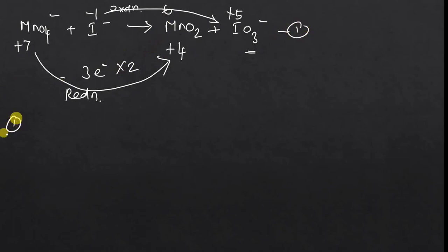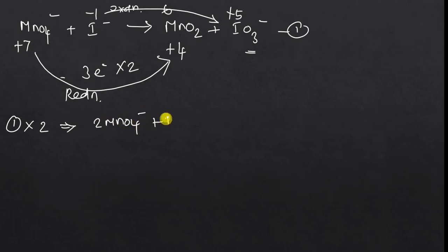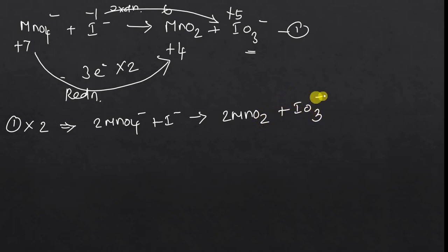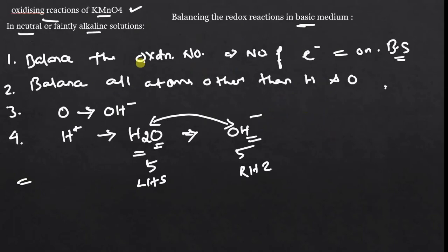So the first equation shall be multiplied by 2 in order to balance the electrons, and shall be written as: 2MnO4⁻ + I⁻ → 2MnO2 + IO3⁻. We have to balance the oxidation number and the number of electrons, and that has been done by multiplying by simple numbers.